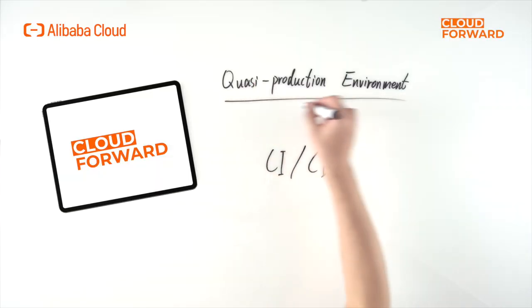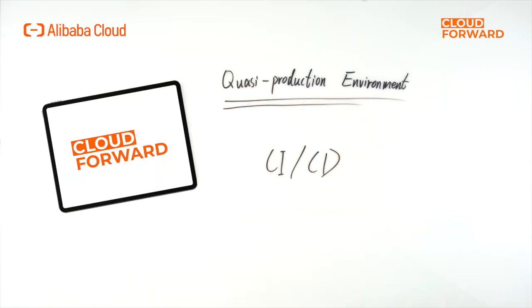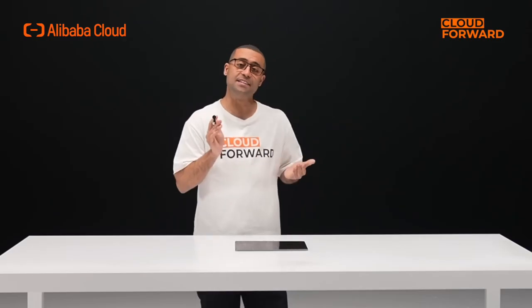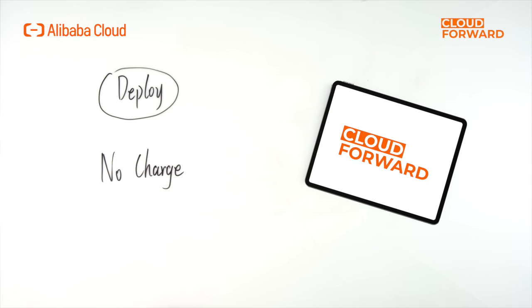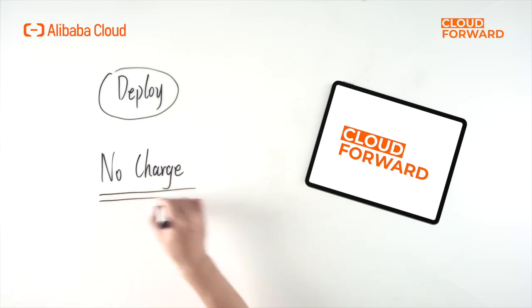In serverless architecture, we can provide each developer with a quasi-production environment. When doing CI/CD, we can create separate demo environments for each feature branch. This allows team members to immediately deploy and preview new features without having to simulate on their own machines or coordinate testing environment usage time with other colleagues when developing new features or fixing bugs. We also don't need to pay for idle resources.